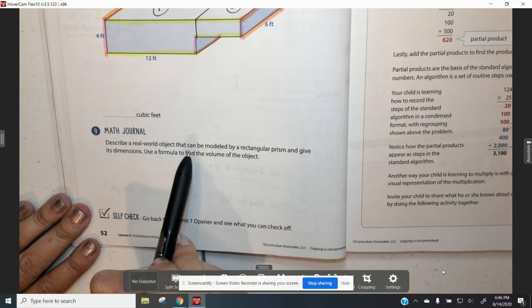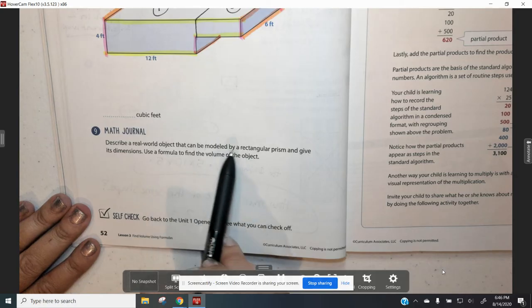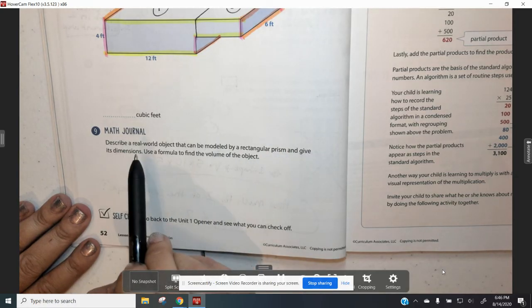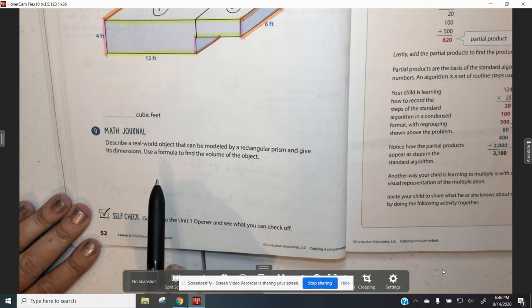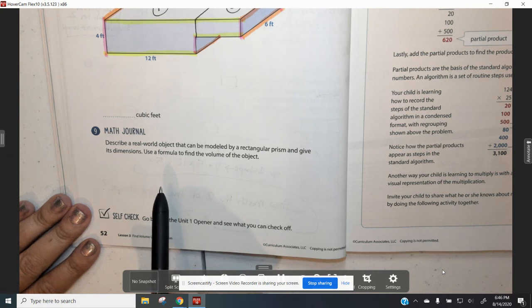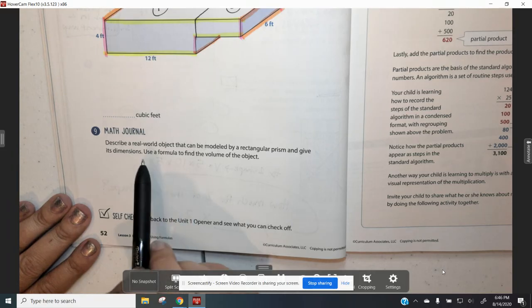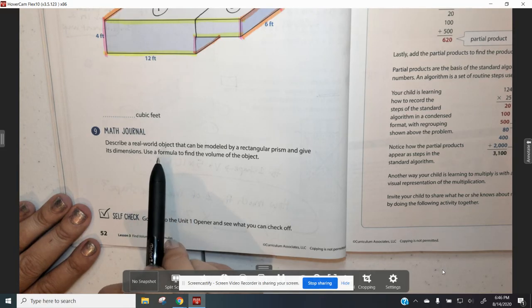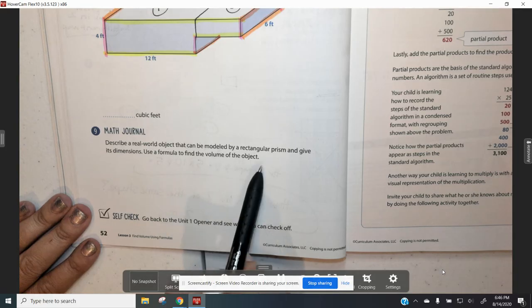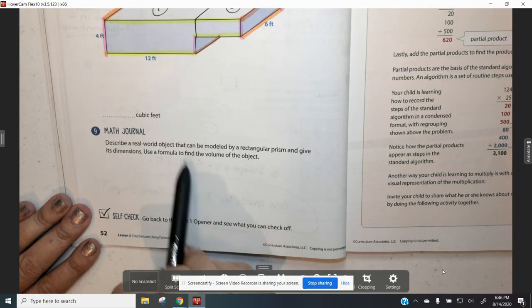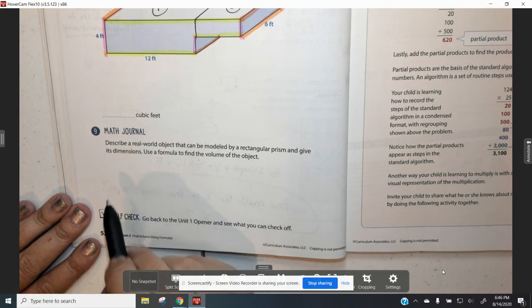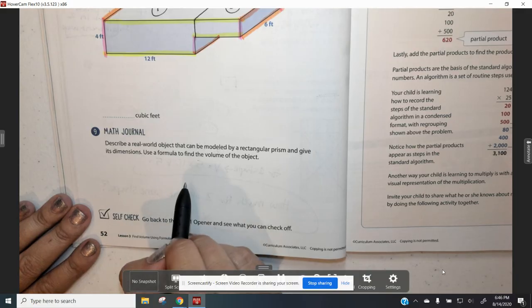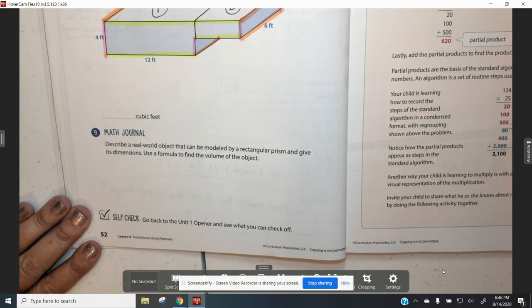Finally in the math journal, you need to describe a real world object that can be modeled by a rectangular prism and give its dimensions. Maybe like a book or a box of cereal or anything that is a rectangular prism shape. Then you need to use a formula to find the volume of the object. You're going to draw a sample of the object, label the length, the width and the height, and then find the volume.